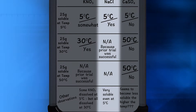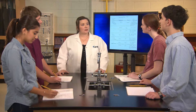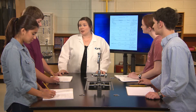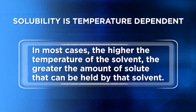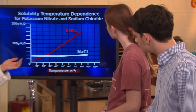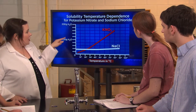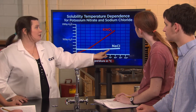The teacher affirmed the students' use of terminology. For soluble substances like potassium nitrate and sodium chloride, temperature does indeed play a role. We say that solubility is temperature dependent, because in most cases, the higher the temperature of the solvent, the greater the amount of solute can be held. These graphs are called solubility curves, and they show the temperature dependence on the solubility of both potassium nitrate and sodium chloride.